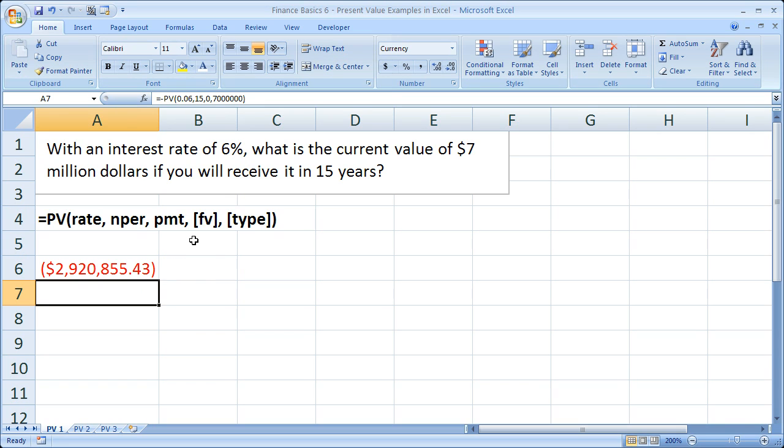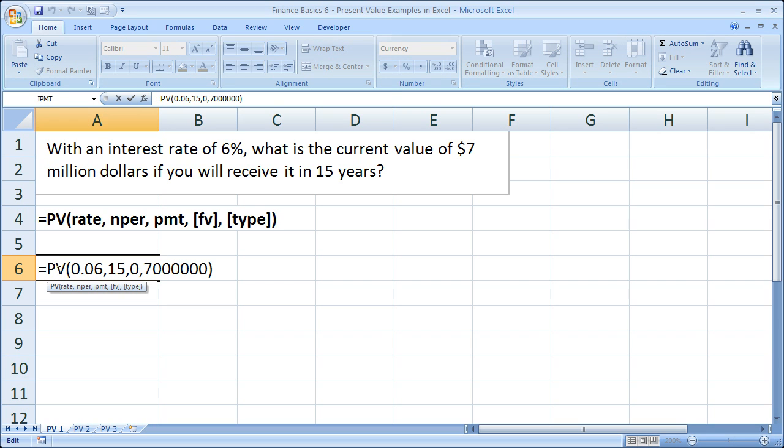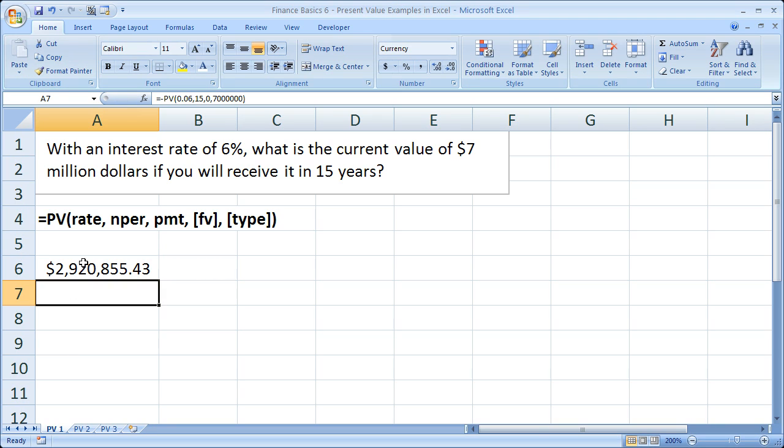So it tells us that the present value is just about 3 million dollars. Now why is this red? Why is this negative? Well because it's assuming that this is your cash outflow. So you're going to put this 3 million in, say, a bank or a bond that pays 6%, and to put your money into something you have to pay it out. But to get rid of the red, the negative, simply put a little minus sign right in front of the PV function. Once you do that you'll notice that it's a positive number once again.